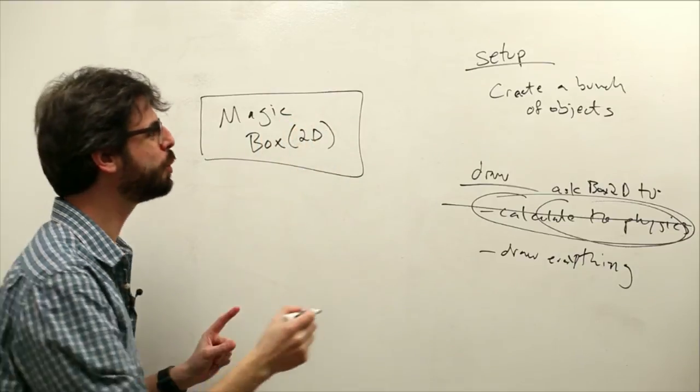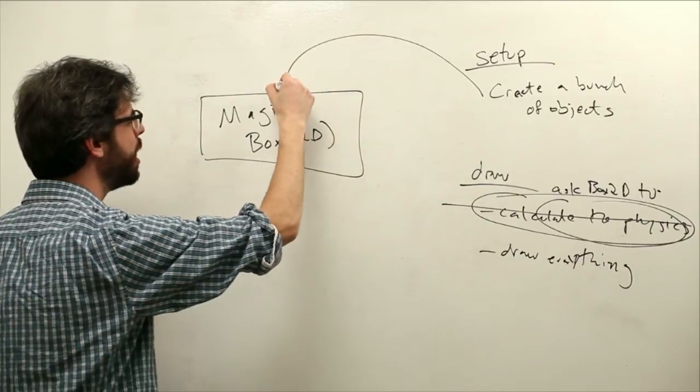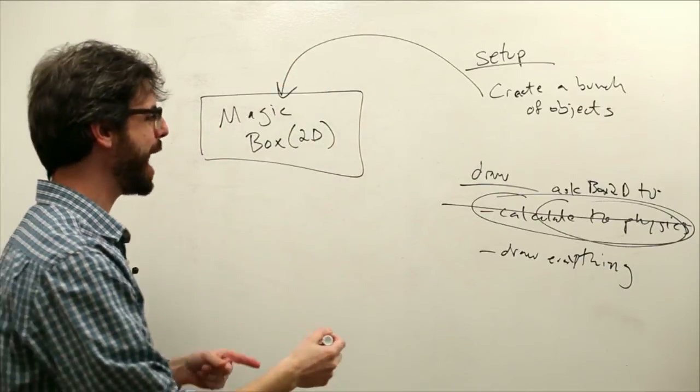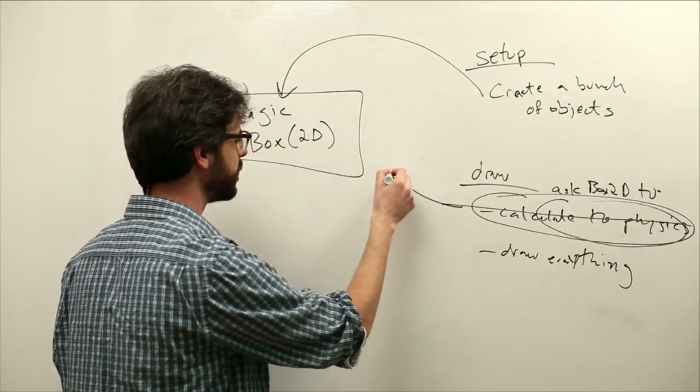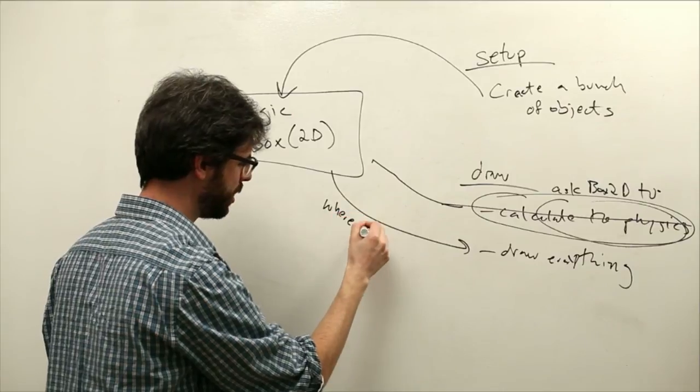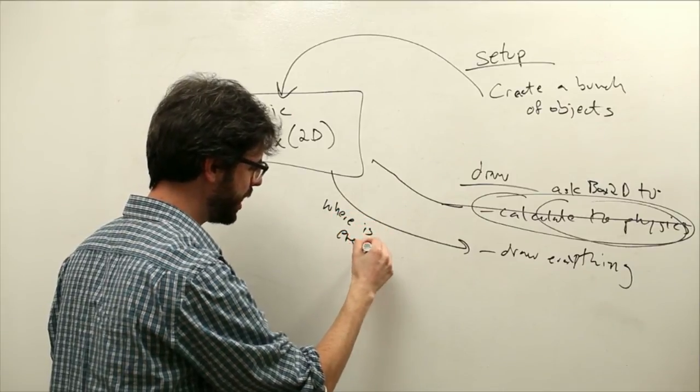There's this magic Box2D, right? And what we do is we create a bunch of objects in setup, and we put them in the magic box. And then every time through draw, we say, hey magic box, where is everything?